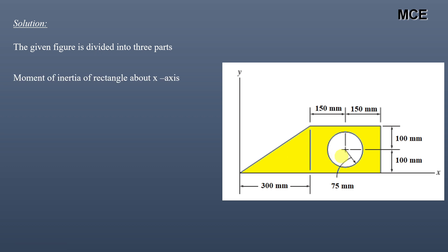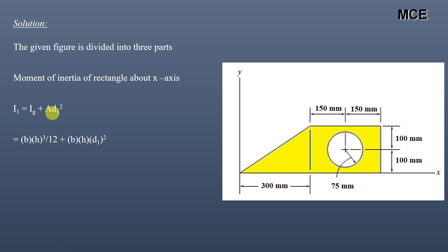The moment of inertia of the rectangle about the x-axis will be calculated using the parallel axis theorem. It is given as the moment of inertia of this rectangle about its own centroidal axis, plus the area of this rectangle multiplied by the distance between the centroid of this rectangle and the x-axis.